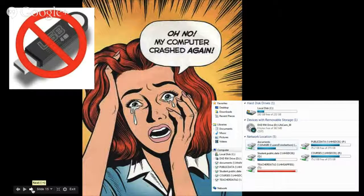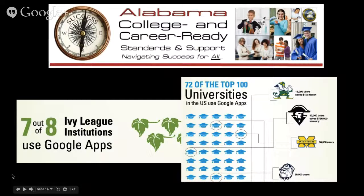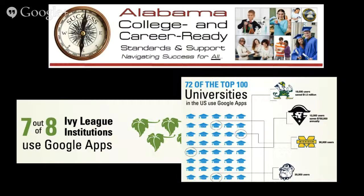Here in Alabama we want to get our students college and career ready. Seven out of eight Ivy League institutions use Google and Google Apps, and 72 of the top 100 universities in the United States use Google and Google Apps. So if we want to get our students college and career ready, Google is one of the things we need to be exposing them to.